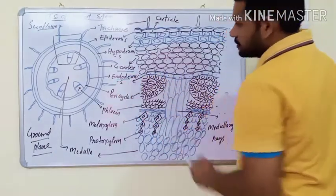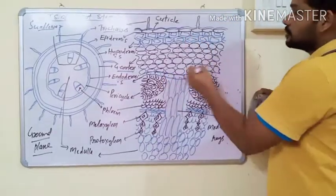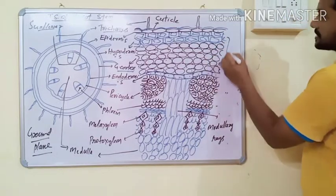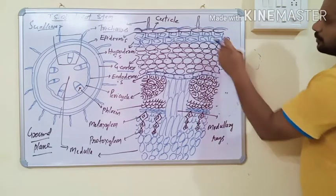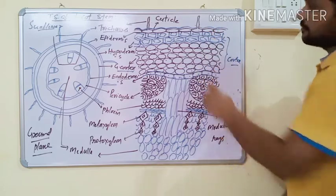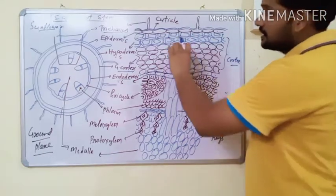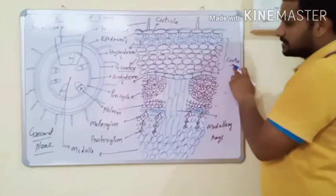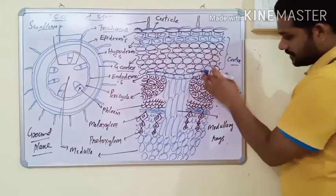The next layer is endodermis. Endodermis is the innermost layer of cortex. The region from hypodermis to endodermis is known as cortex, and from pericycle inward, this entire region is known as stele. Endodermis is usually unilayer and the cells are barrel-shaped. In dicot stem, the endodermis is rich in starch grains.